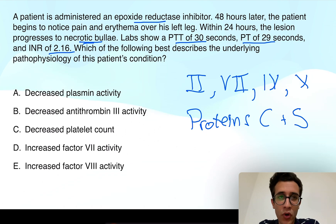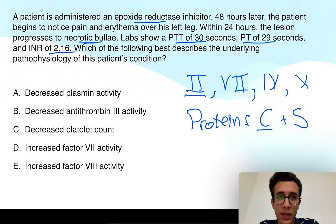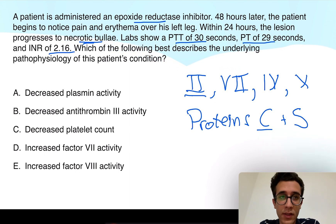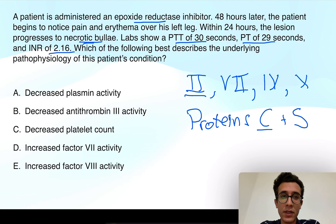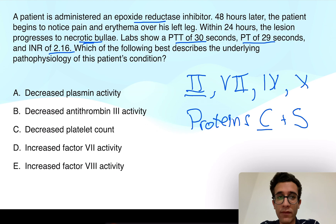Among those proteins, factor 7 and protein C have the shortest half-lives, while the other factors have longer half-lives. This is why the PT is already prolonged, as it reflects the extrinsic pathway which relies on factor 7. Since we've inhibited vitamin K activation, the only active coagulation factors are those present before warfarin was administered. You will run out of active protein C before the other coagulation factors, because it has a shorter half-life.